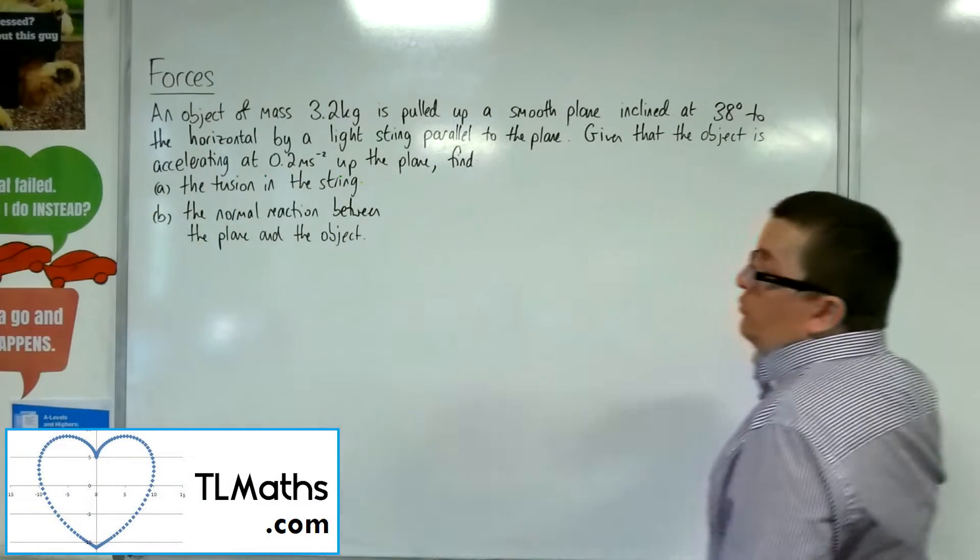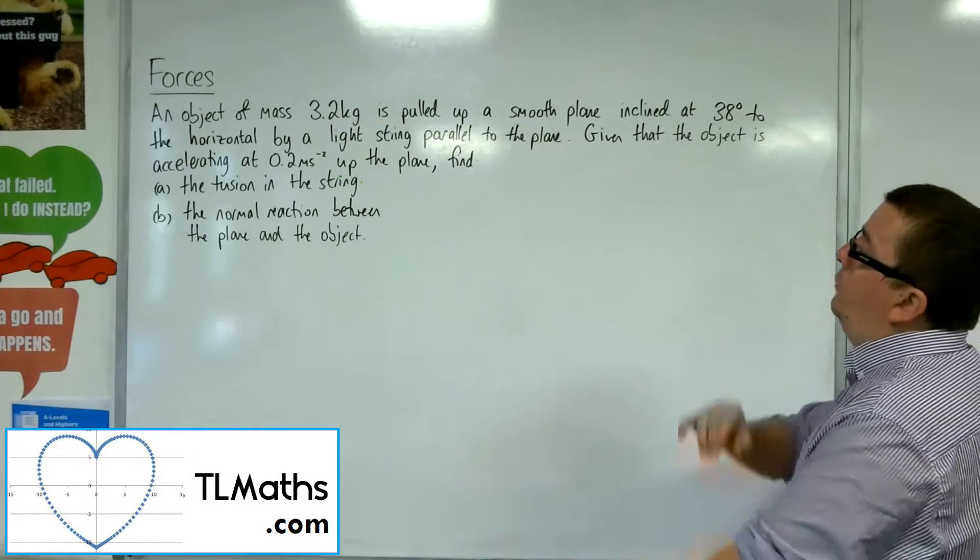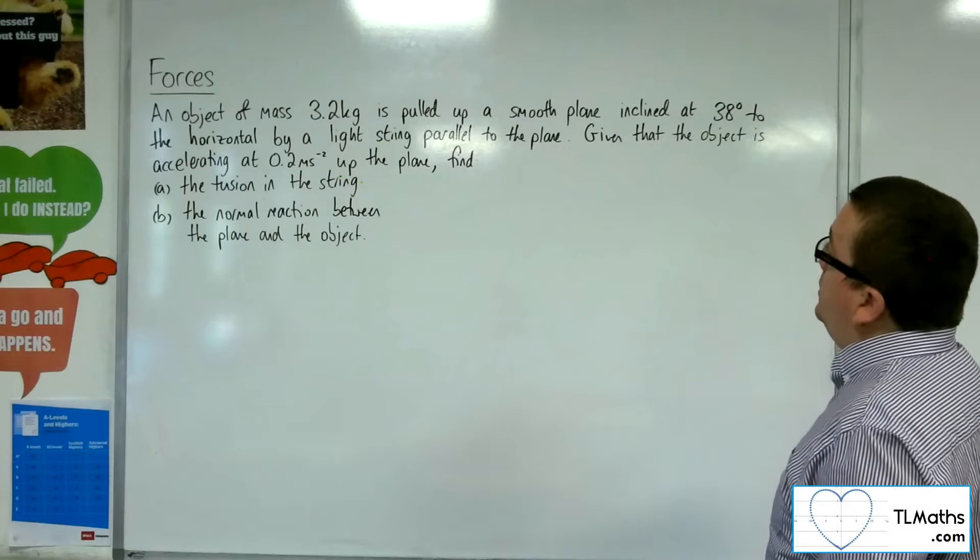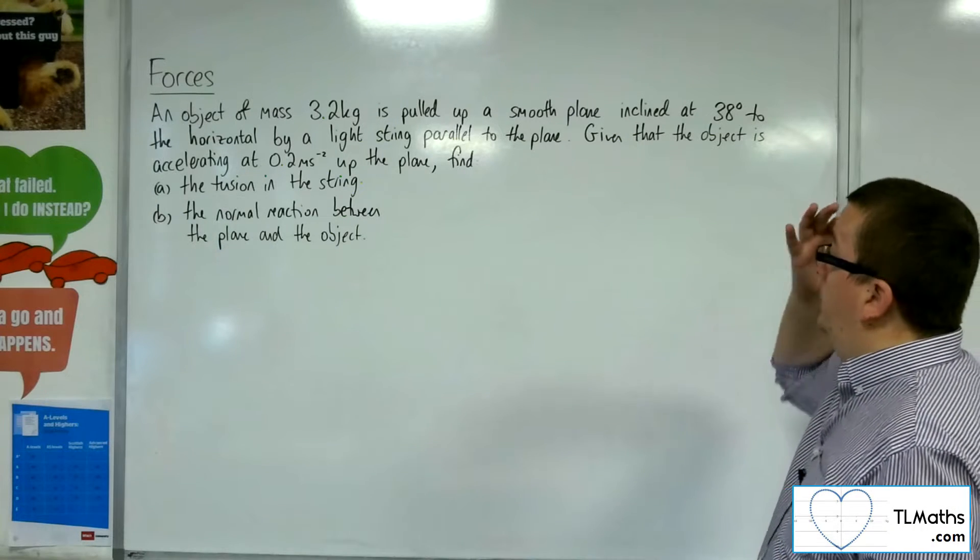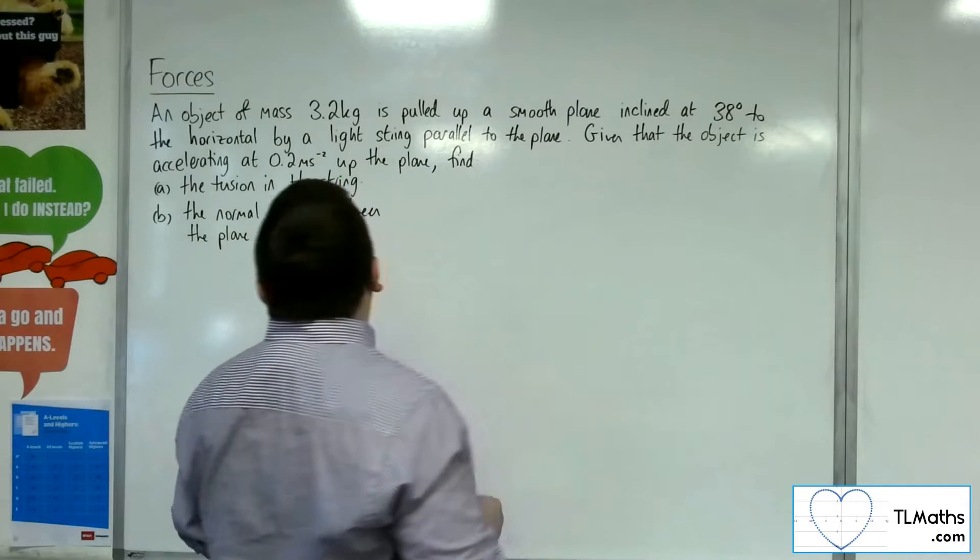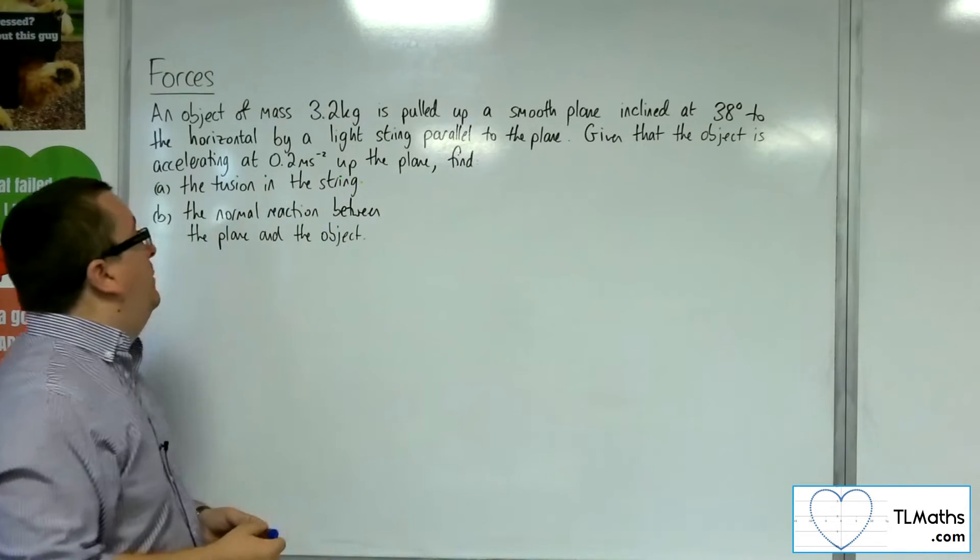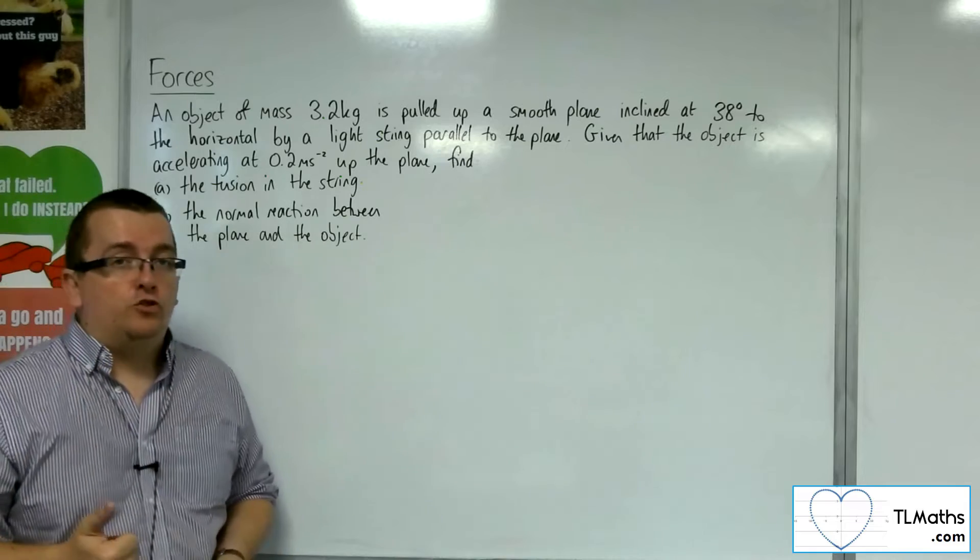In this video, an object of mass 3.2 kilos is pulled up a smooth plane, inclined at 38 degrees to the horizontal, by a light string parallel to the plane. Given that the object is accelerating at 0.2 meters per second per second up the plane, find firstly the tension in the string.